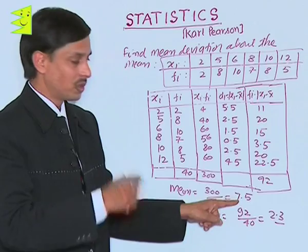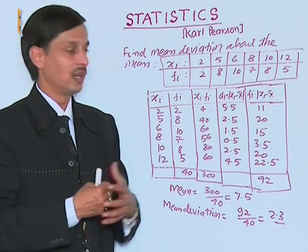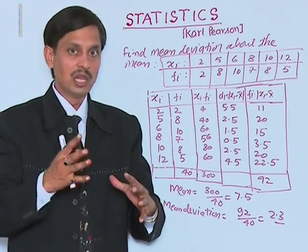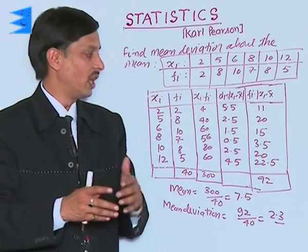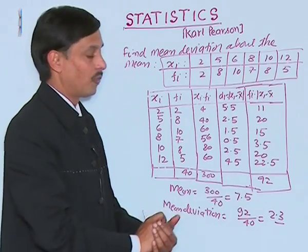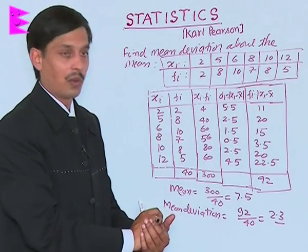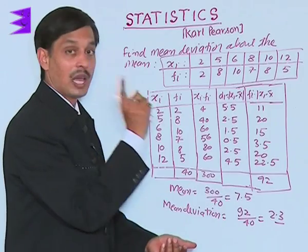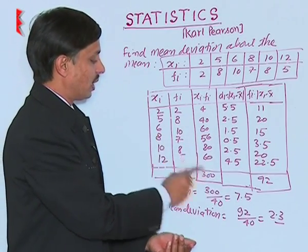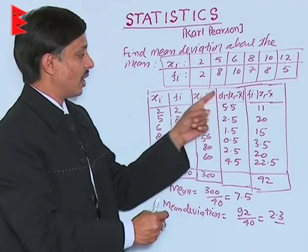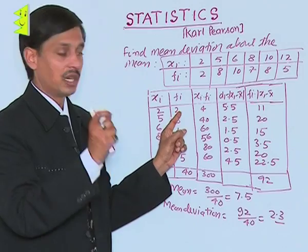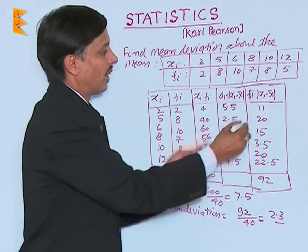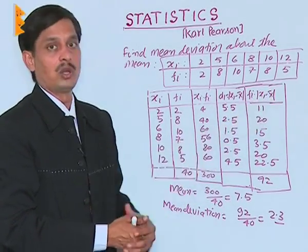From each observation, subtract 7.5 and take the mod to get the deviations di. So: |2-7.5| = 5.5, |5-7.5| = 2.5, |6-7.5| = 1.5, and similarly for 8, 10, and 12. When frequencies are given, the mean deviation formula uses fi × di, or equivalently fi × |xi - x̄|.